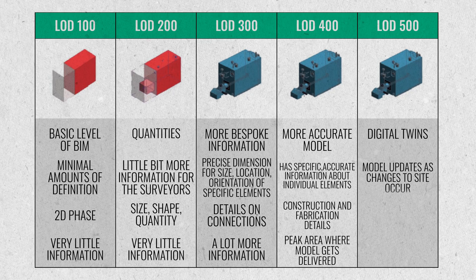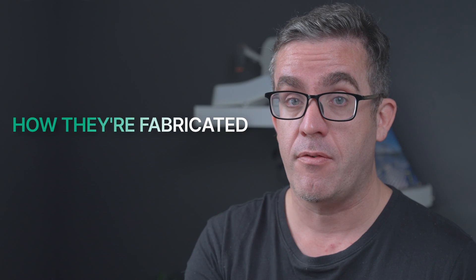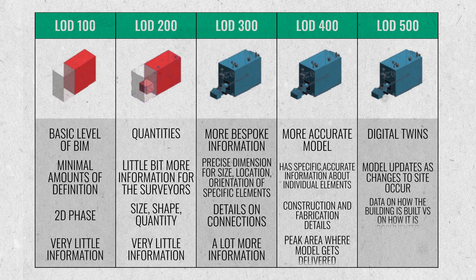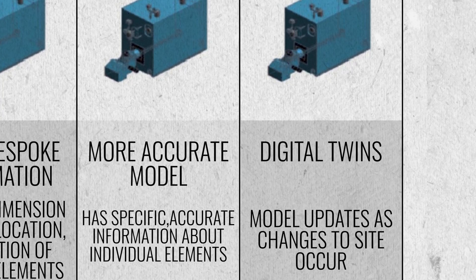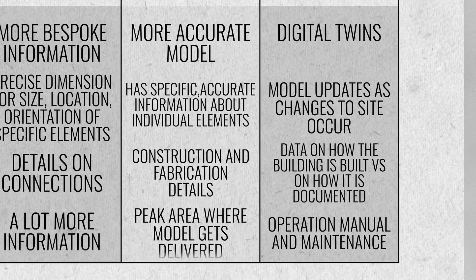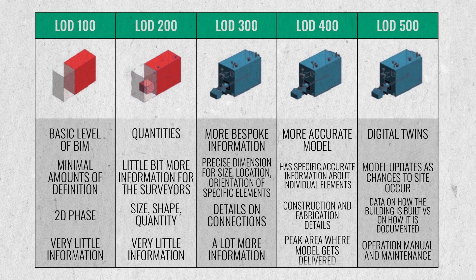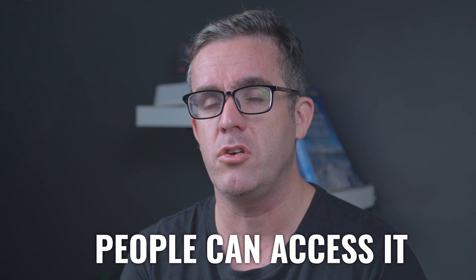At LOD 500, you're looking at where each component is, how they're fabricated, and any changes that may have occurred on site — so when this model is complete, it represents the as-built conditions, how the building was actually built as opposed to how it was originally documented. You'd also have information about how to maintain elements, operation manuals for specific elements, and maintenance data. If this is in a closed BIM environment, over time that information will be lost — so if you're doing an LOD 500 model, you want to make sure people in the future can access it, meaning open BIM methods are the better choice.